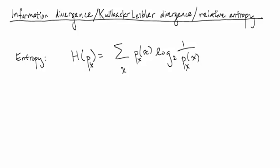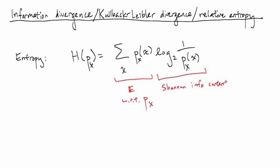This video is going to build off my previous video on entropy. As a reminder, the entropy for a distribution p(x) is going to be given by an expectation. We're taking an expectation with respect to distribution p(x), so these give us the weights used when computing the expectation. The labels — the numbers we're computing the weighted average for — are just the Shannon information content of seeing the outcome little x.